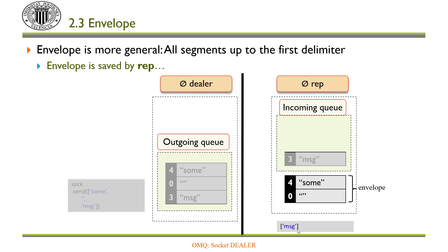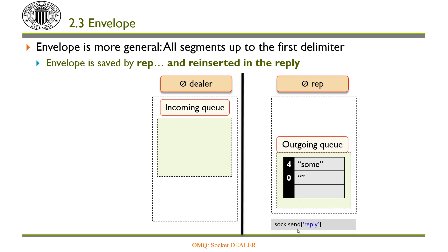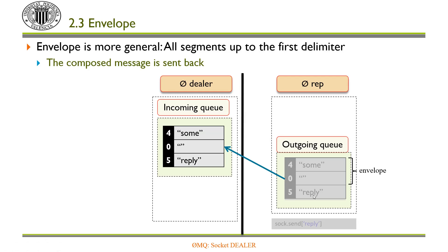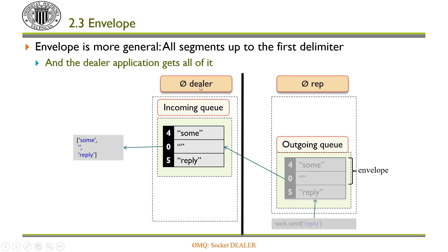When the server replies to the client, all those segments placed at the envelope are prepended to the message that we are sending. In this case, the reply consists of a single segment, the string REPLY. And the envelope is reinserted before the actual contents of the message. All these segments are propagated to the client that, in this case, is using a dealer, and all are delivered to the process at that client site.